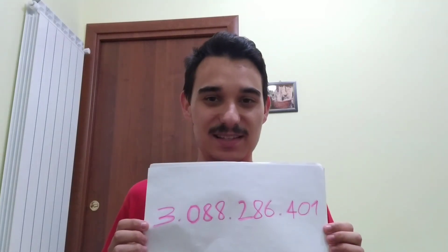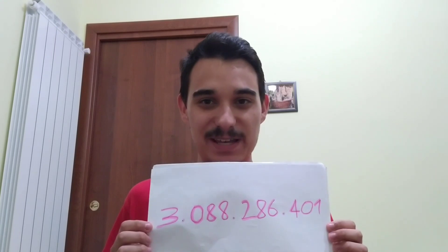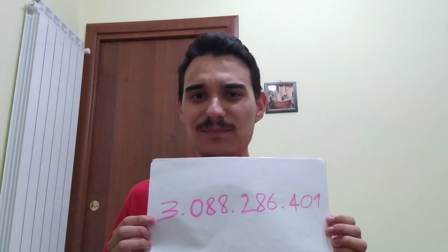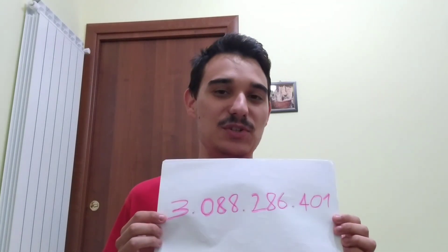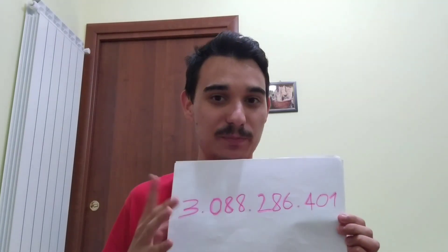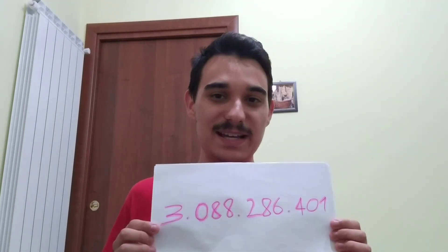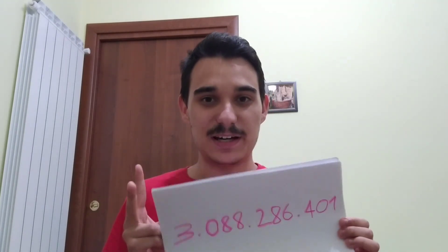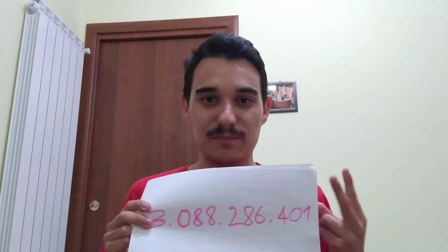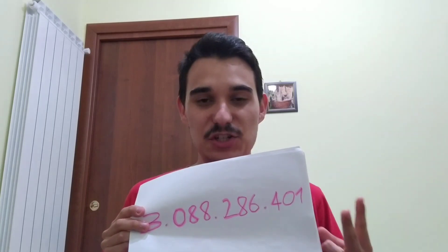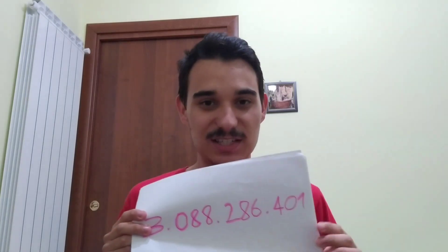This is the number of base pairs in the human genome. Each base can be chosen out of four possibilities. This means that each base can be coded by two binary digits — two bits.